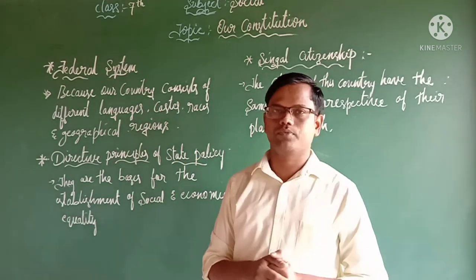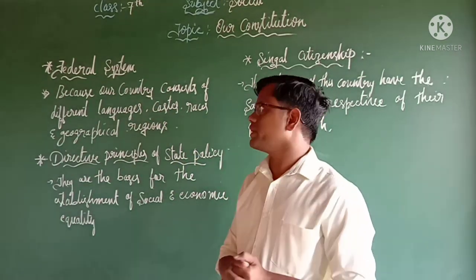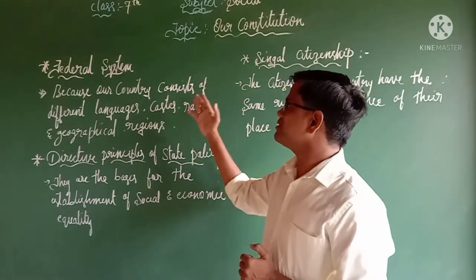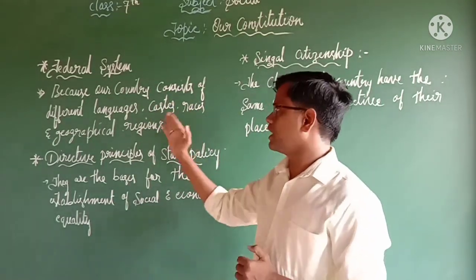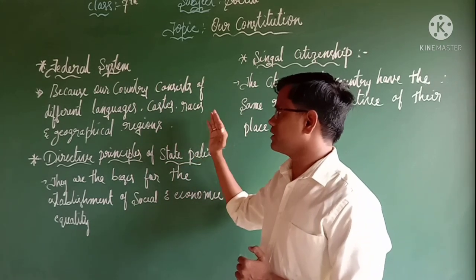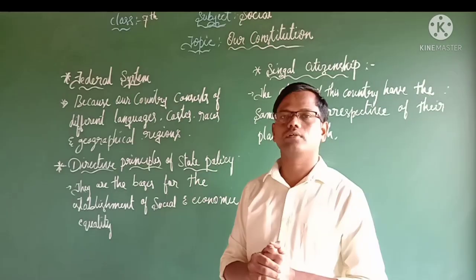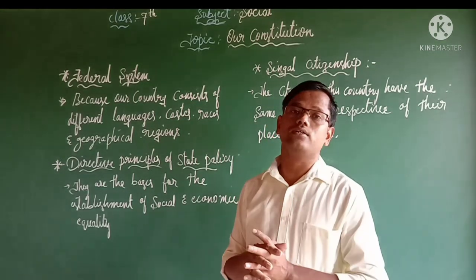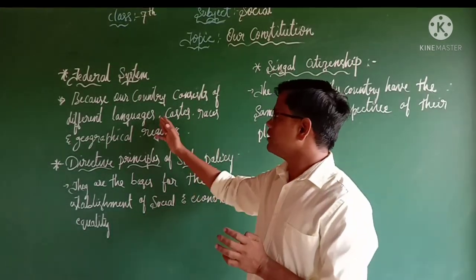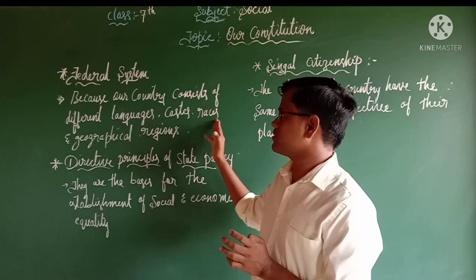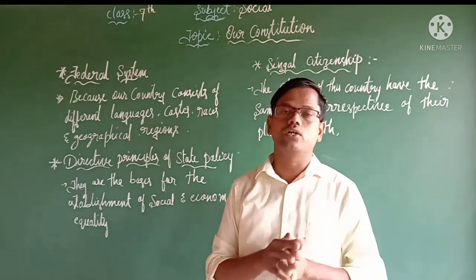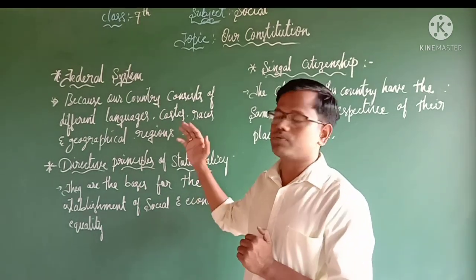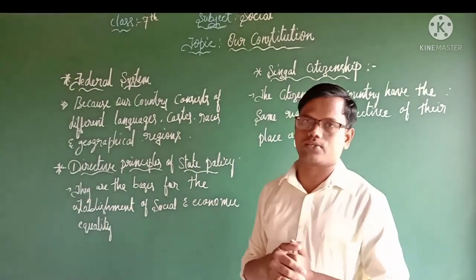The next feature is the federal system. Our constitution provides for a federal system because our country consists of different languages, castes, races, and geographical regions. In case any disputes arise between the central and state government regarding languages, castes, races, or geographical regions, the Supreme Court will solve those problems.